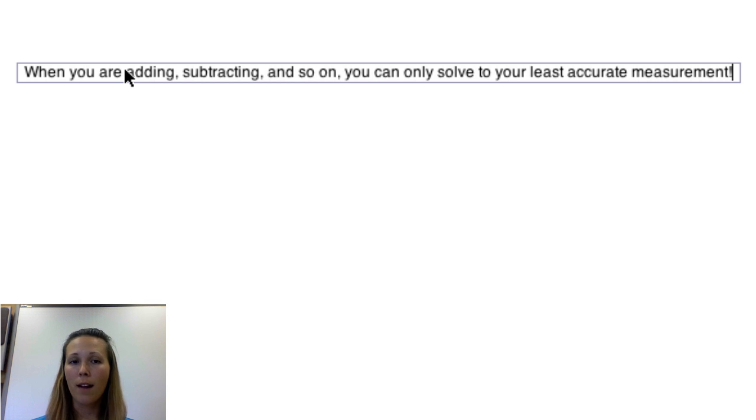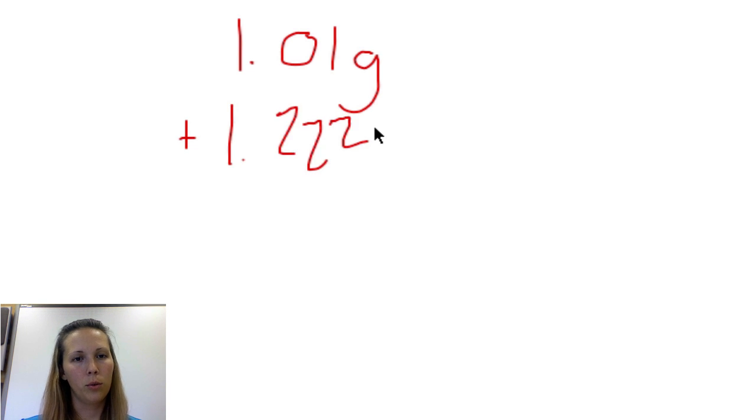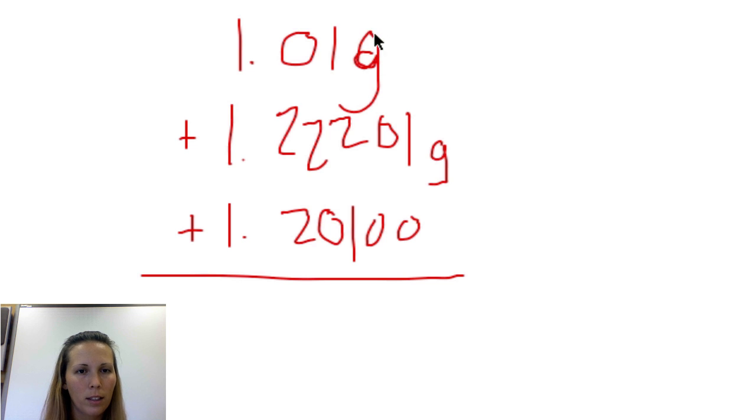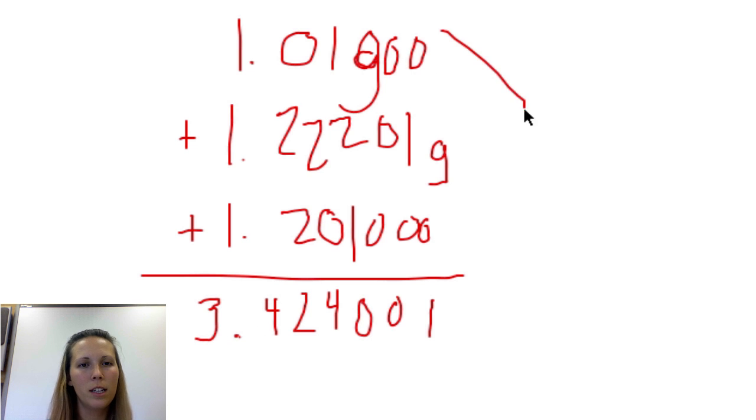Again, when you're adding or subtracting or whatever, you can only solve to your least accurate measurement. So just a quick example. If I'm adding 1.01 grams plus 1.22201 grams and 1.201 grams. I'm adding these. So I'm going to add little placeholders in here just so that I can add them correctly. How many are there? 3, 4, 5. Just so I can add these, right? So because it doesn't look very straight. It doesn't look like I've done it very evenly.